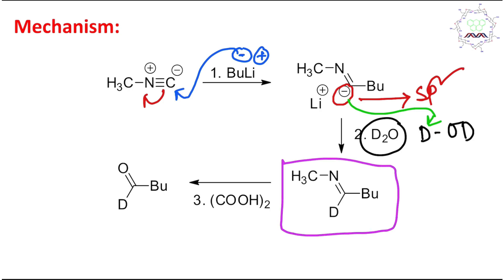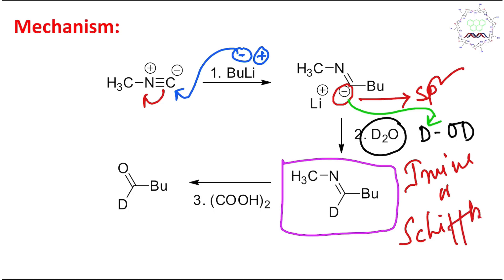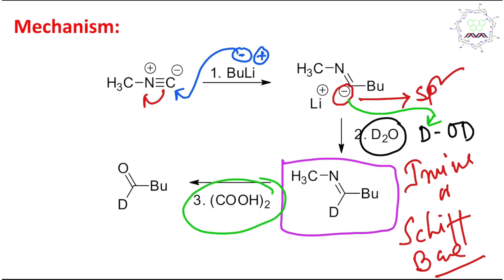If you look carefully at this molecule, you will see it is nothing but an imine — a Schiff base. I have already discussed Schiff base formation in a dedicated lecture, so please visit that for better understanding. In the last step, oxalic acid is added, which converts this imine into the corresponding aldehyde — a simple hydrolysis where two hydrogens attach to nitrogen and a double bond to oxygen forms on the carbon.